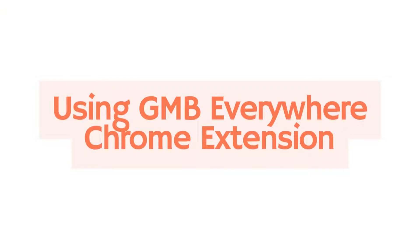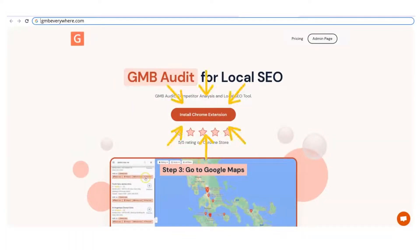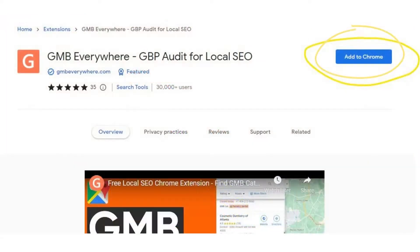All you need is the GMB Everywhere Chrome Extension installed in your Chrome browser. To install this lightweight and easy-to-use Chrome Extension, just head to gmbeverywhere.com and click Install Chrome Extension. After that, you will be redirected to the Chrome Store page for GMB Everywhere and click Add to Chrome.